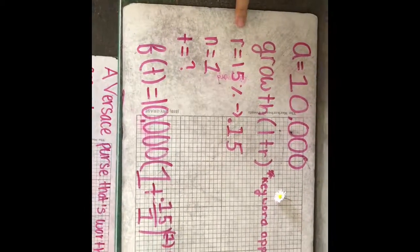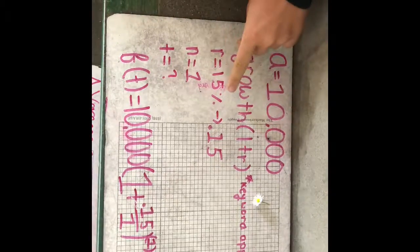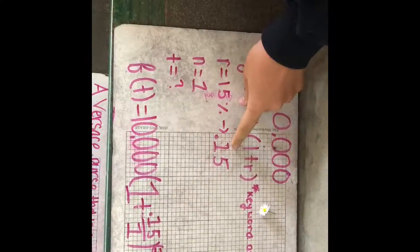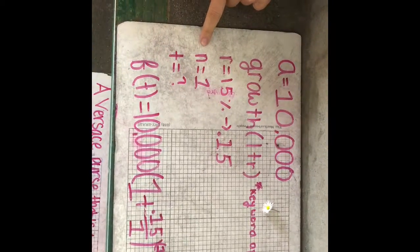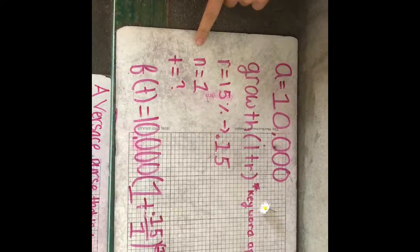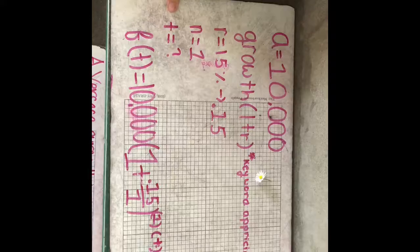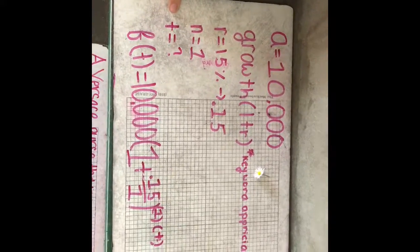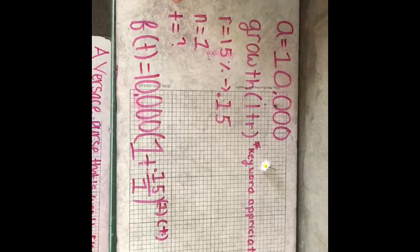The next thing it says is it goes up by 15%, so since it's 15% you would convert it into a decimal. Next you would do n equals 1 because the number of times in the year is only one time. And then t, we don't know what t is, and usually in the standard equation you leave t blank because they'll give it to you, and since we're splitting it into two parts you'll see that in the next question.